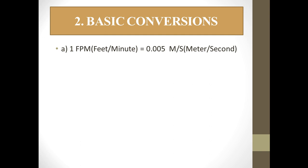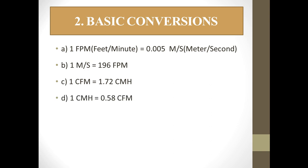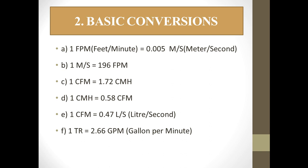Continuing with basic conversions for velocity and flow rates: (a) 1 FPM (feet per minute) = 0.005 meters per second; (b) 1 meter per second = 196 feet per minute; (c) 1 CFM = 1.72 CMH (cubic meters per hour); (d) 1 cubic meter per hour = 0.58 CFM; (e) 1 CFM = 0.47 liters per second.